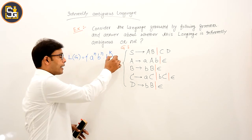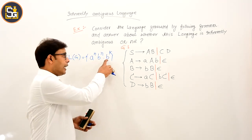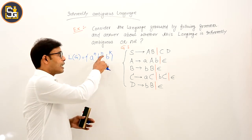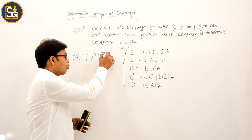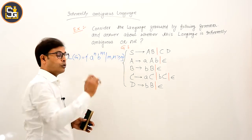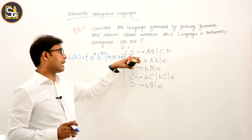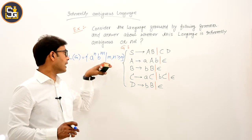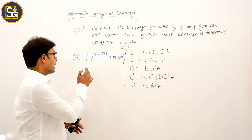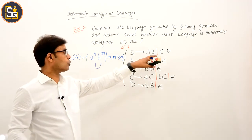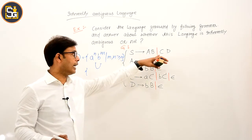Here, n and k are both greater than or equal to zero. Now, there is also the situation where S derives CD.